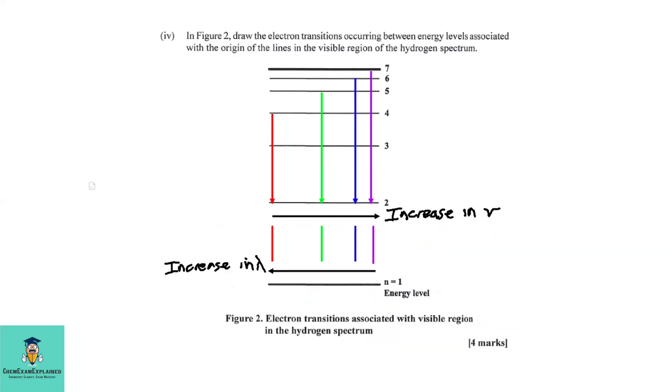Part A4: In Figure 2, draw the electron transitions occurring between energy levels associated with the origin of the lines in the visible region of the hydrogen spectrum. Now, we must be aware that the visible lines in the hydrogen spectrum are four distinct lines.